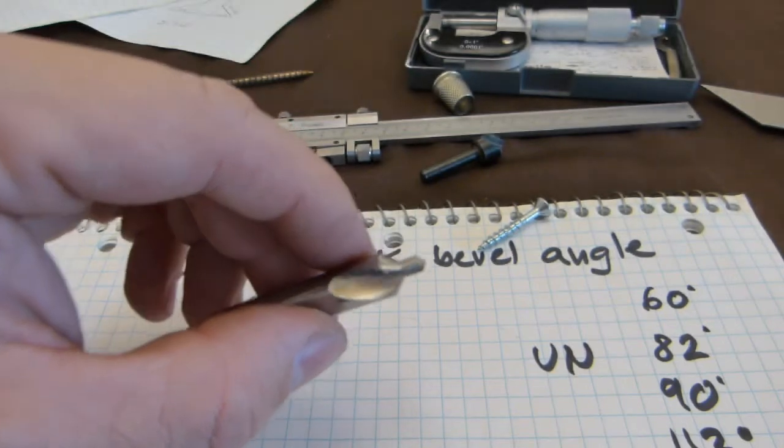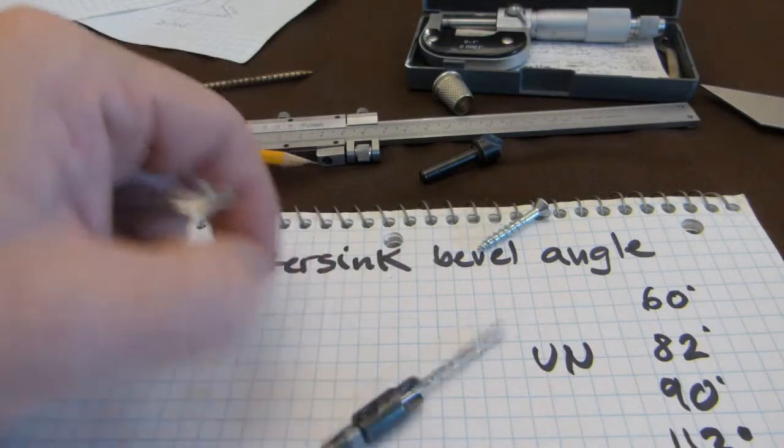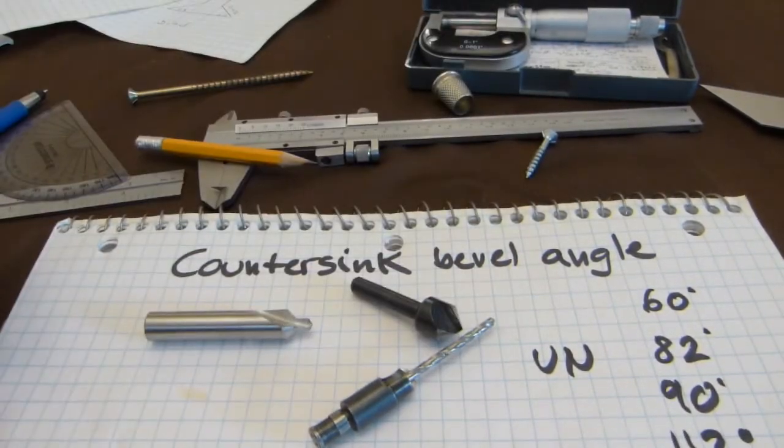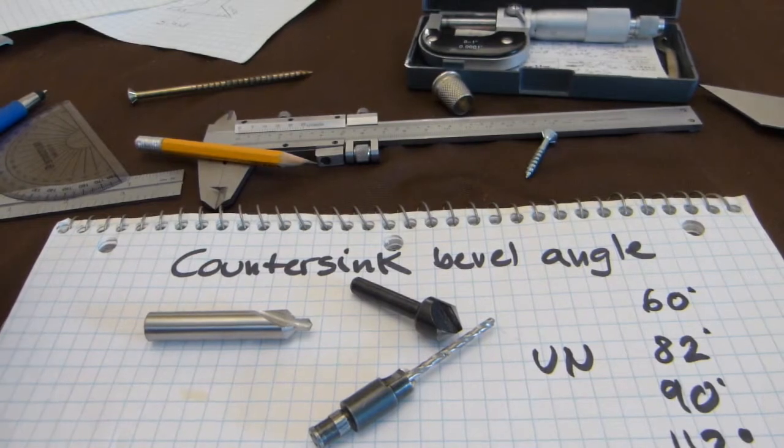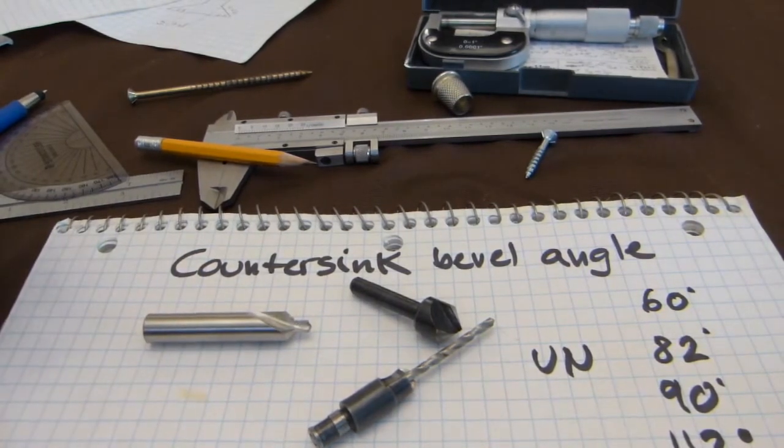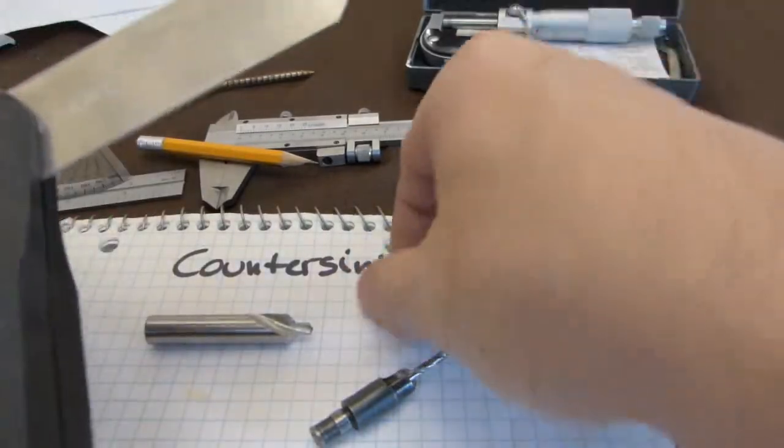In this video I'll show you how to check the angles on your countersink bits. And I'm going to show you two ways, one is very easy, just grab yourself a very inexpensive bevel gauge like this.